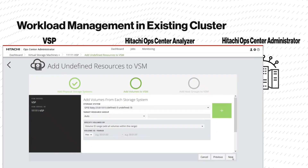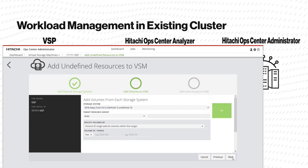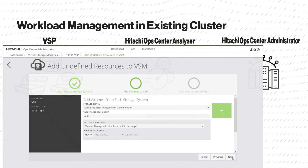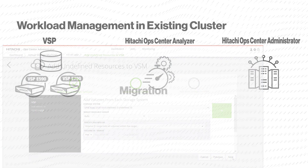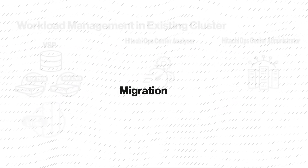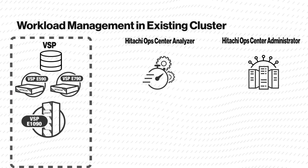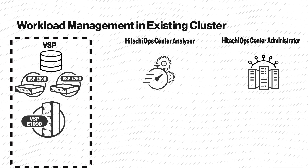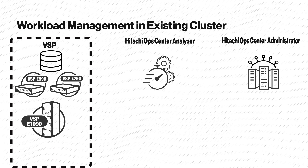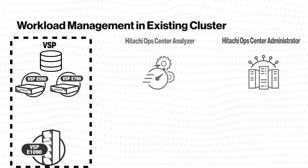To simplify the process, Ops Center Administrator allocates the volumes from a predefined range. In the future, as the capacity and number of applications grow, we may need additional capacity. We thus add another node to the cluster, a VSP-E1090, and provision the new application from this storage system as well.